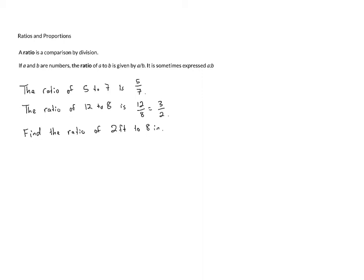Now, we can't just say that the ratio is 2 eighths. That's not correct. And the reason is we have units, and these two quantities are using two different units.